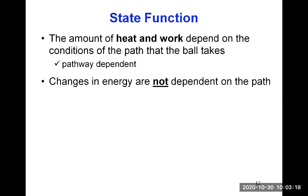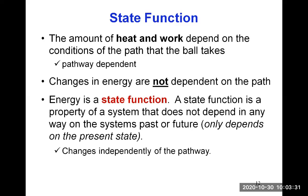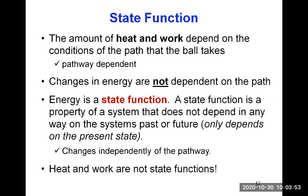However, the changes in energy are not dependent on the path — the change of energy for A depends on the initial position and the final position of A. So we say that energy is a state function. A state function is a property of a system that does not depend on the system's past or future; it only depends on the present state — the final state and the initial state — and it doesn't depend on the pathway. Energy is a state function because it only depends on the initial and final position. However, heat and work are not state functions because they depend on the pathway: if the hill is more or less rough, there will be more or less heat and more or less work.